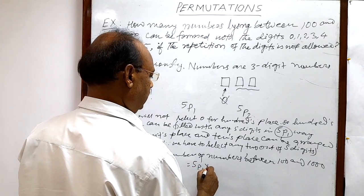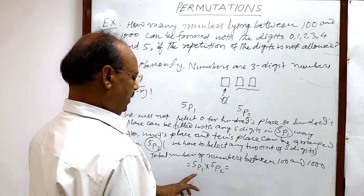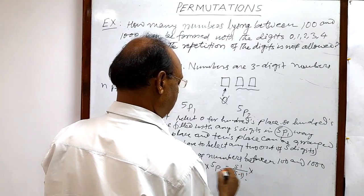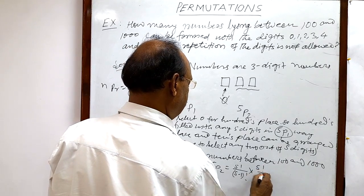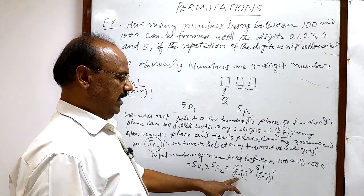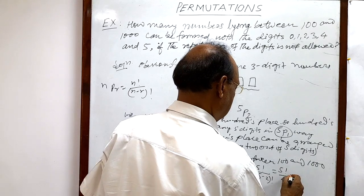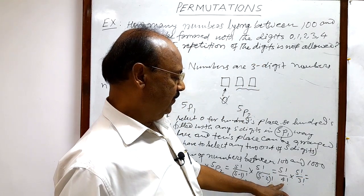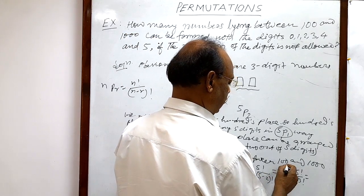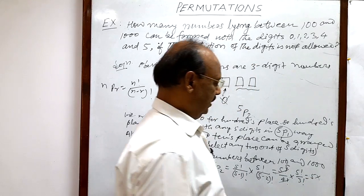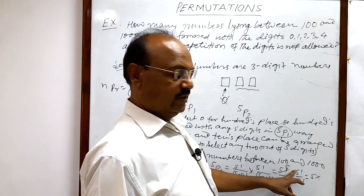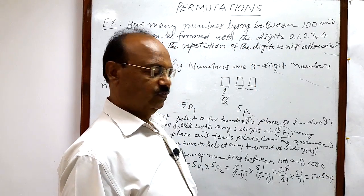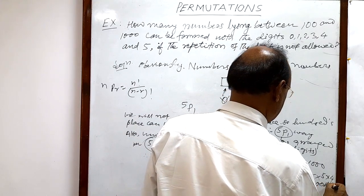Therefore, the total number of numbers between 100 and 1000 is equal to 5P1 × 5P2. This gives us: 5! / (5−1)! × 5! / (5−2)! = 5!/4! × 5!/3!. The 4! cancels with 5! to give 5, and 5!/3! = 5 × 4 = 20. So the result is 5 × 20 = 100.